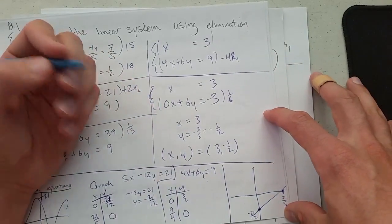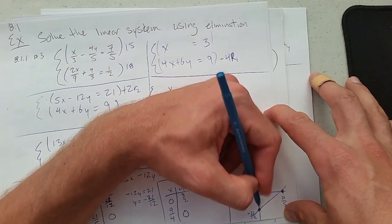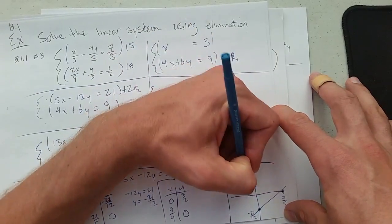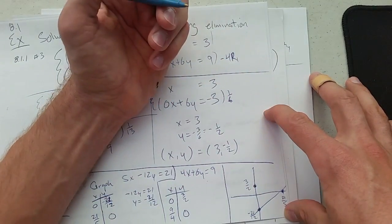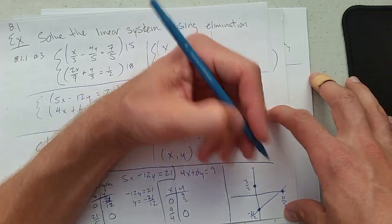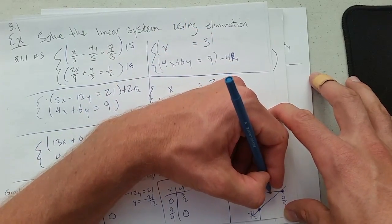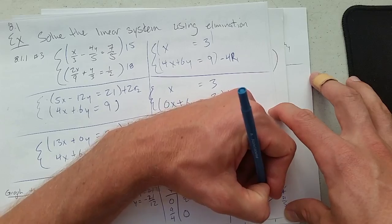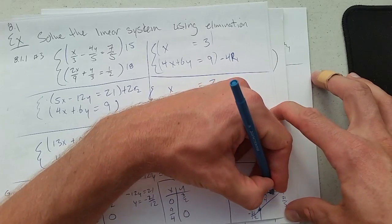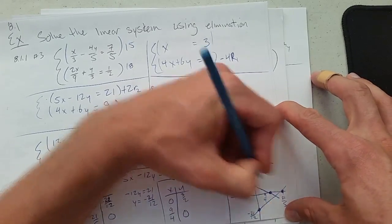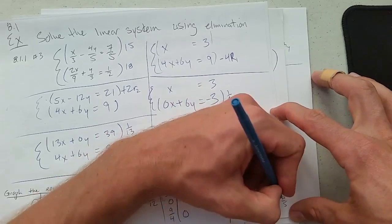So (0, 3/2)—that's somewhere right about there. And (9/4, 0)—a little bigger than 2, right about there. Connect them with a line. Of course, the line keeps going—put arrows at the end.